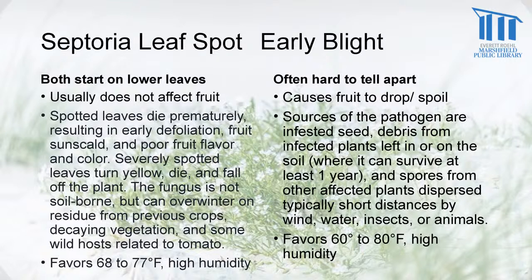Both diseases start on the lower leaves of the plant and usually do not affect the fruit. The spotted leaves get more and more spots, die prematurely, and fall off the plant. What happens then is the fruit is exposed to the sun and gets sunscald, resulting in poor fruit flavor and color. Sunscald is that yellow appearance on the top or side of a tomato facing the sun.